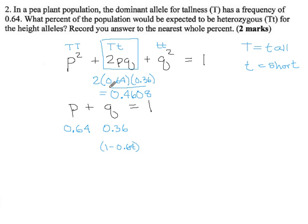That's our decimal frequency. So you can say 0.4608 of the population or if you multiply that by 100 you'll get a percentage and it will be 46.08%. Round to the nearest whole percent so apparently they just want 46%. 46% of this population will be heterozygous for the tall short allele.